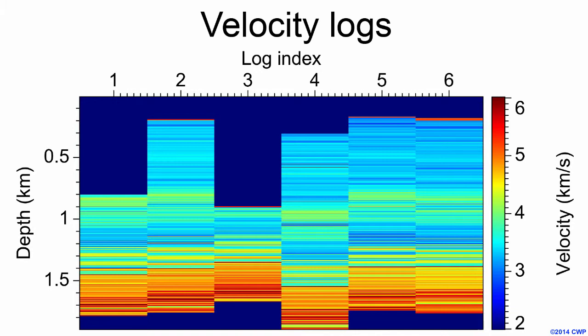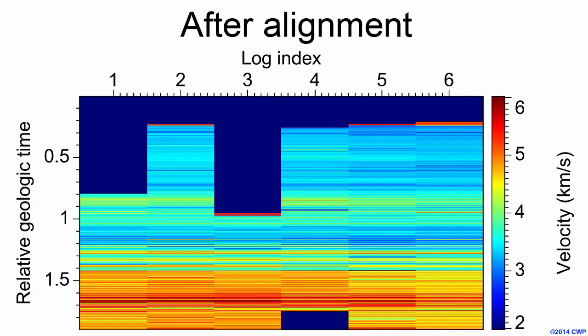Well log correlation is a process of determining corresponding depths among well logs. A single set of such corresponding depths implies that the sediments at those depths were deposited at the same time. We can therefore map these logs from depth to time to get an image such as this, where the values of relative geologic time are arbitrary — all that we're saying is that sediments with earlier relative geologic times are younger than those with later relative geologic times.